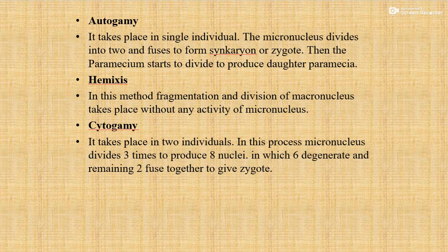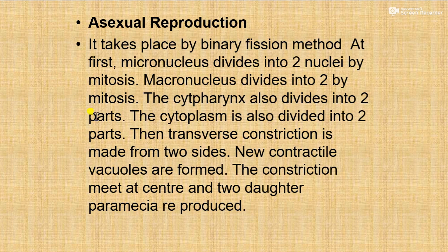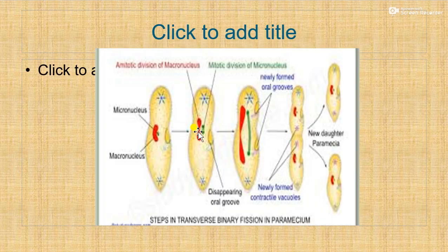Now we see asexual reproduction. In asexual reproduction, it involves only a single parent. It takes place by binary fission. Transverse binary fission is the most common method of reproduction in paramecium.